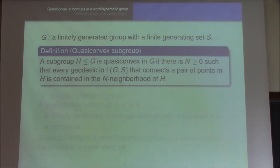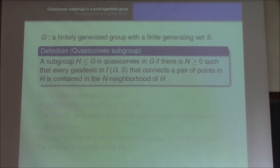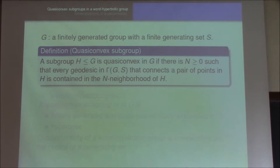Let's record the definition of quasi-convex subgroup. Let G be a finitely generated group with a finite generating set S. Then a subgroup H is quasi-convex if there is a constant N such that every geodesic in the Cayley graph with respect to the generating set S that connects a pair of points in H is contained in the N-neighborhood of H. By the definition, quasi-convexity depends on the choice of a generating set.